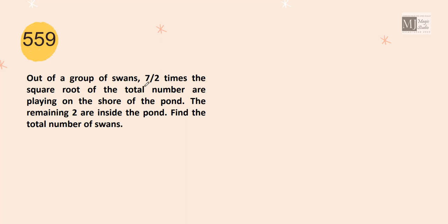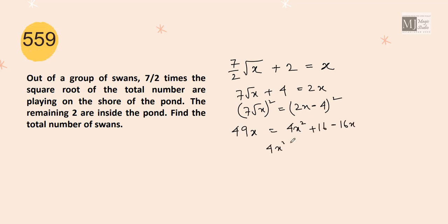Question number 559. Out of a group of swans, 7 by 2 times the square root of the total number are playing on the shore. The remaining 2 are inside the pond. Playing on the shore plus the remaining 2 is equal to total number of swans. X is either 1 by 4 which is not possible. They are swans. They can't be in fraction. So if I take x minus 16 is 0, the number of swans should be 16.